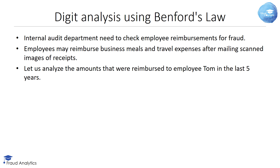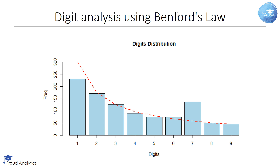Let's work out an example of using Benford's Law for fraud detection. Assume the internal audit department of a company needs to check employee reimbursements for fraud. Employees may reimburse business meals and travel expenses after mailing scanned images of receipts. Here you can see the distribution of the reimbursements depicted by the light blue histogram. The red line corresponds to Benford's Law. It is clear that the dataset has fewer ones and more sevens than expected under Benford's Law. Based on this discrepancy, the company can further investigate Tom's expenses. After analyzing his reimbursements starting with seven, it was detected that Tom replaced one-third of his expenses starting with one by a seven before scanning the receipt.